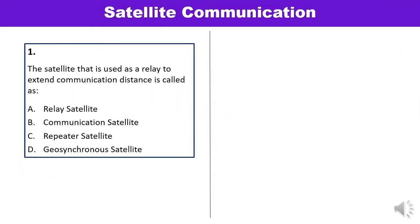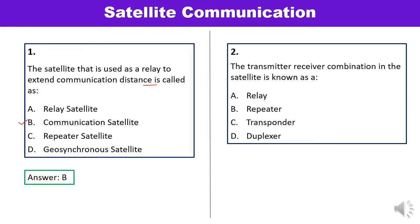Question 1: The satellite that is used as a relay to extend communication distance is called? When earth stations cannot communicate directly because of line-of-sight restrictions, a satellite is used, and that type is known as a communication satellite. The correct answer is B. Question 2: The transmitter-receiver combination in the satellite is known as? This is nothing but the transponder — answer C is correct.